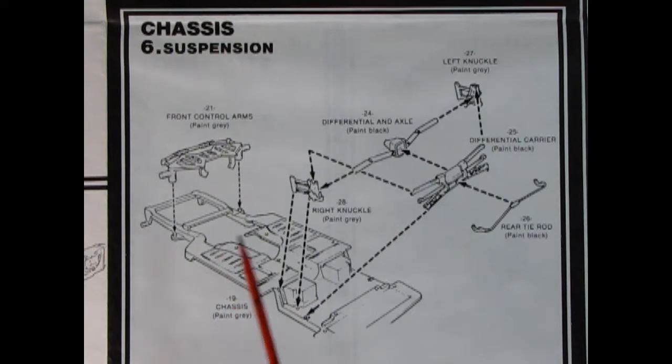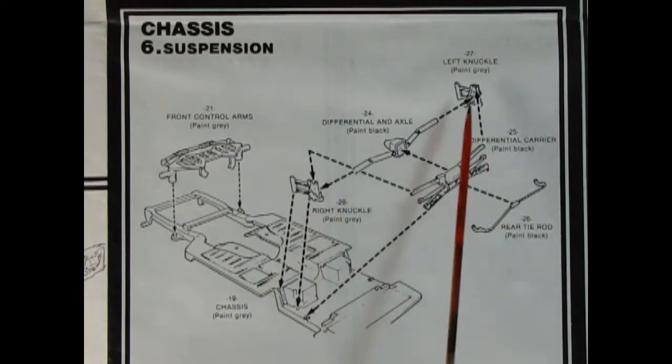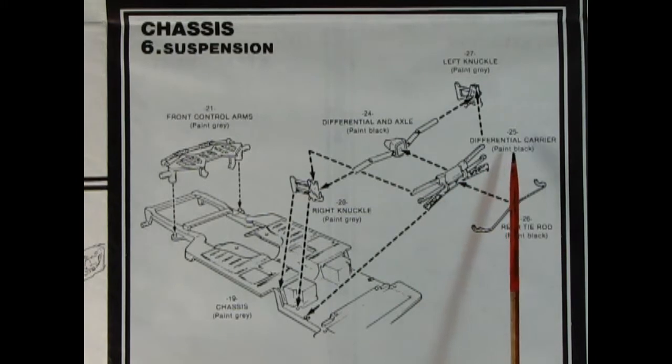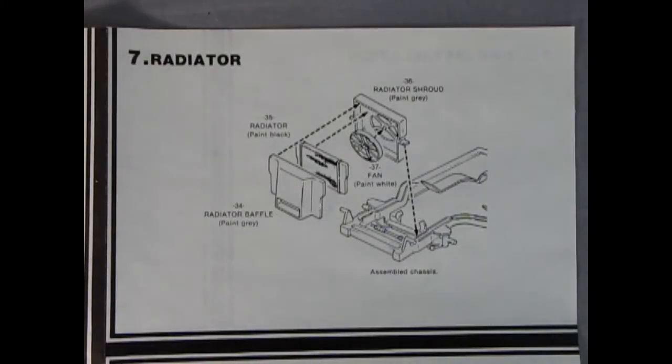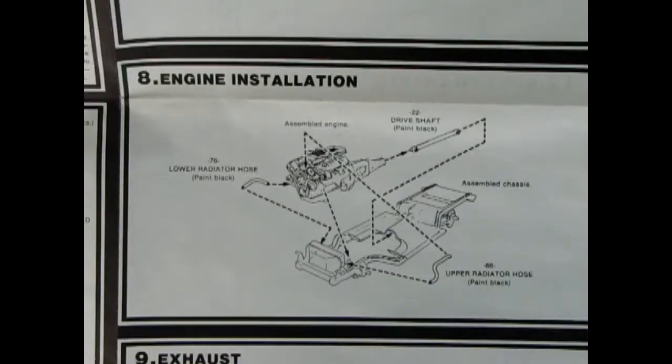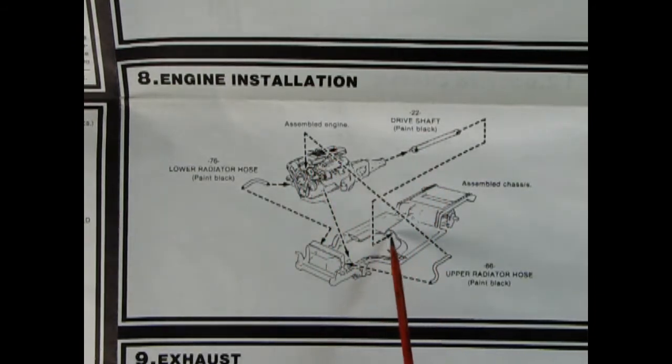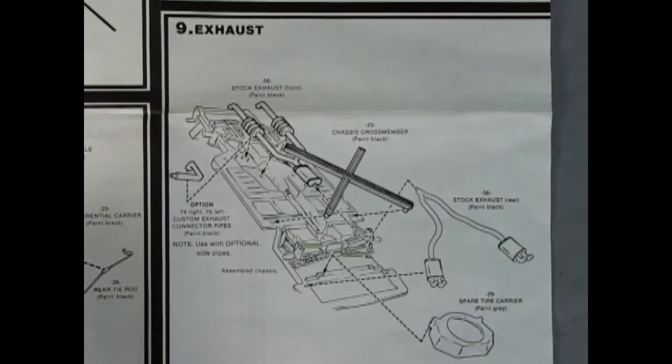Now we get into the chassis and suspension in step six. We've got our front control arms - it says to paint them gray - and our chassis pan underneath. There's our right and left knuckle for our differential and axle, the differential carrier, and rear tie rod. Step seven shows that wonderful four-piece radiator with the outer shroud, fan, radiator itself, and radiator baffle. You've got to paint them and they all drop onto the chassis. Panel eight shows our engine installation with our drive shaft swinging underneath into the rear axle. The front goes into the transmission back end, then our engine drops into place. You can put in the lower and upper radiator hoses and complete it.